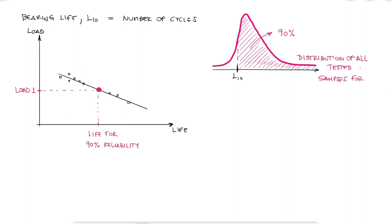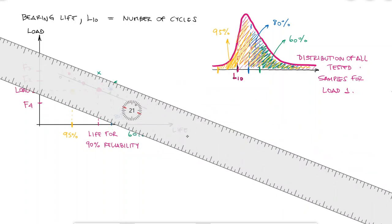We could also see the life and number of cycles for 80% reliability, or the life for 60% reliability, or the life for 95% reliability, and we could even create a line that passes through all the 60% reliability points for different forces.